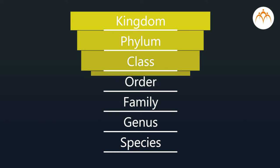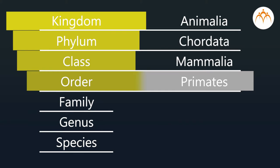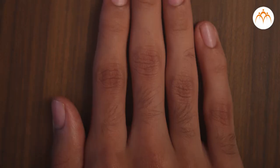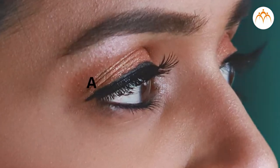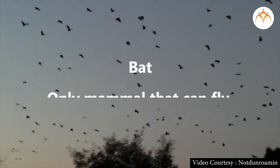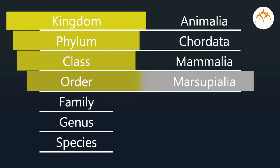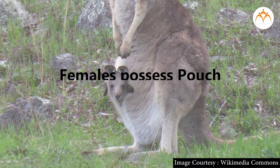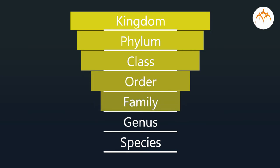From the order level onward, their groups differ. Man belongs to Order Primates — animals of this order possess an opposable thumb, have nails instead of claws, and have accurate vision. Bat belongs to Order Chiroptera — it is the only mammal that can fly. Kangaroo belongs to Order Marsupialia — females possess pouches to carry their young ones. All hierarchy levels beyond order are also different for these three animals.